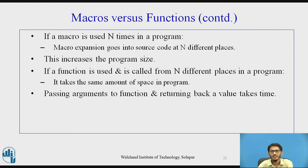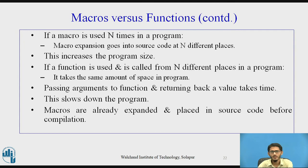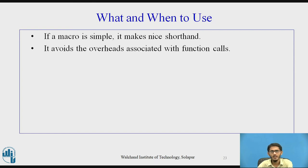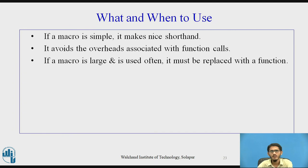Passing arguments to a function and returning a value takes time, which may slow down the program. Macros are already expanded and placed in the source code before compilation. The conclusion on when to use macros vs functions: if a macro is small, it makes a nice shorthand and avoids the overhead of function calls. But if a macro is large and used often, it must be replaced with an appropriate function.